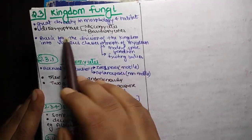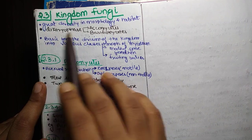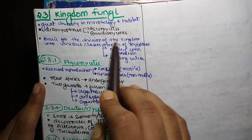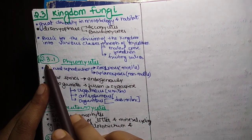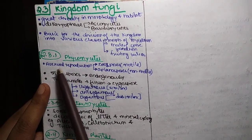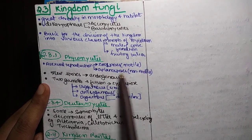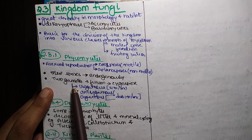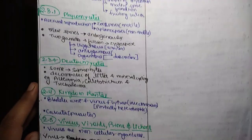Next kingdom is Kingdom Fungi. Great diversity in morphology and habitat. Dikaryotic phase is only present. Ascomycetes, Basidiomycetes. Basis for the division of the kingdom into various classes is Morphology of Mycelium, Mode of Spore Formation, Fruiting Bodies. Phycomycetes. Asexual reproduction. Zoospores and Aplanospores. Zoospores are motile and aplanospores are non-motile. Two gametes fusion. Zygospore is called isogamous if they look similar. Anisogamous and Oogamous if they look dissimilar.